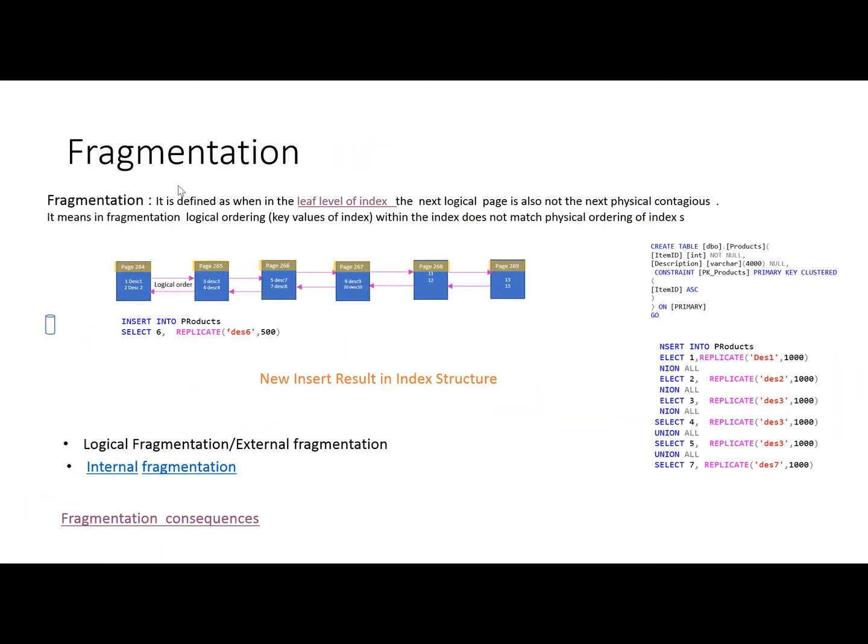In index maintenance, the first step is to look for fragmentation. Fragmentation can be defined as when the next logical page in the leaf level of the index is not the next physical contiguous page. These are the allocation order of the pages on the leaf level structure, and these arrows are showing the logical ordering. We can see that page 264's next physical page is 265, and 264 is pointing out 265. So the physical order and the logical order for all these pages are the same, so there is no fragmentation.